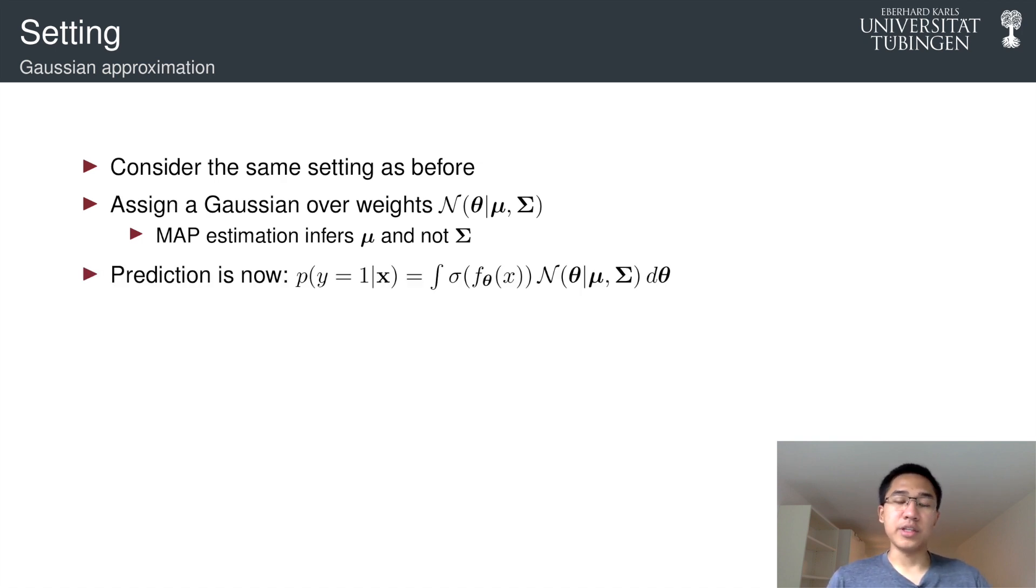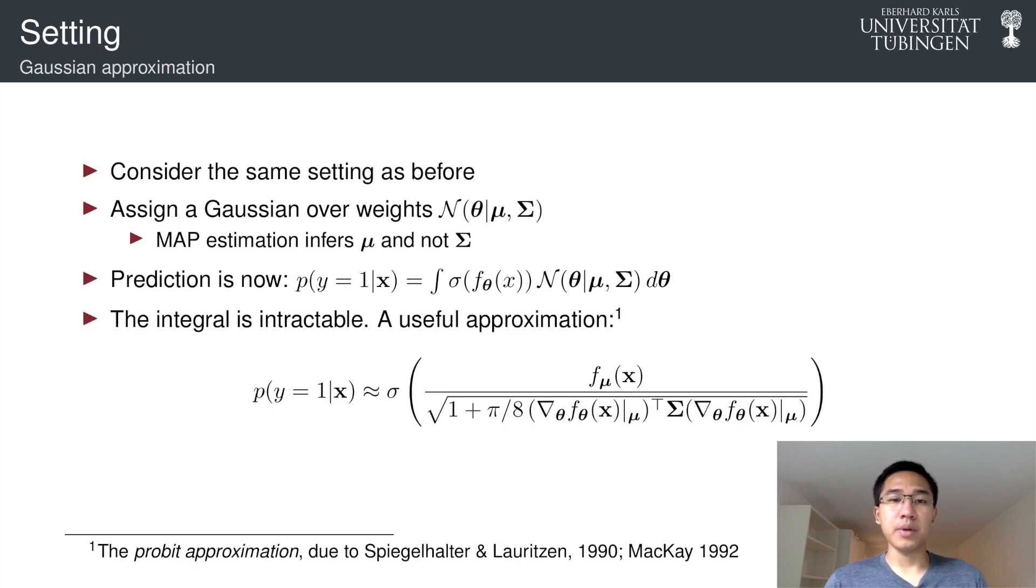And because we have a distribution, we have uncertainty in our weights, then the reasonable thing to do is to marginalize this to get our prediction. But the integral is intractable, so we need approximation. And the useful one is the probit approximation.